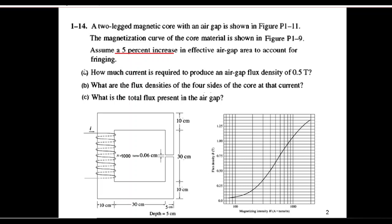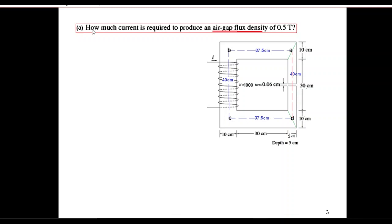Let's look at the circuit. The dimensions of the three sides are the same, with 10 centimeters, and depth is 5 centimeters. This has a bit different, 5 centimeters. There are 1000 turns. Assume a 5% increase in effective air gap area to account for fringing. So I hope you know what is fringing. When the magnetic flux passes through the air gap, it expands in the open area. The area gets increased and that increase in area is 5%, which we have to take care of here.